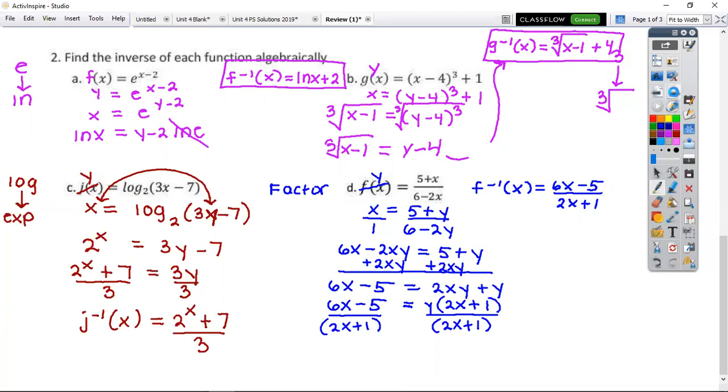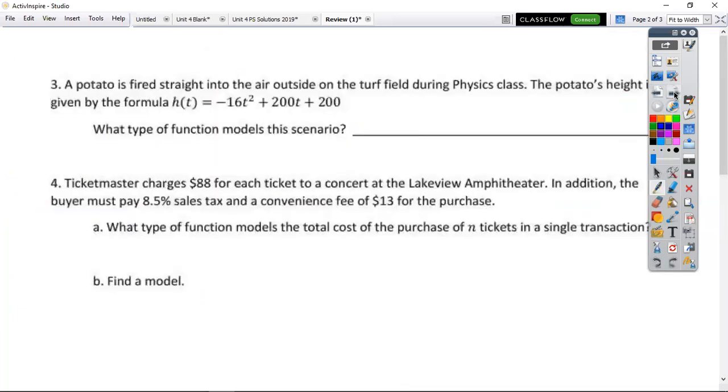Some graphing. I'm going to skip around a little bit, I think, too. Some scenarios and some graphing. A potato is fired into the air on the field during physics class. They actually usually do this quite a bit in the spring. The potato's height is given by the formula. What type of function models a potato getting fired into the air? Very good. That's it. Again, it's a projectile question. And I also gave you the equation, which has a square root in it.